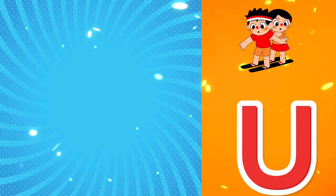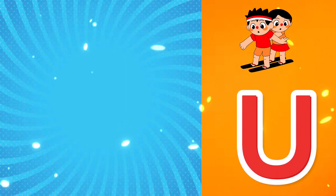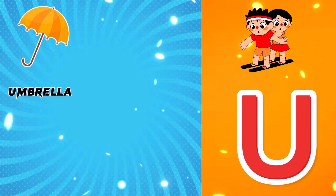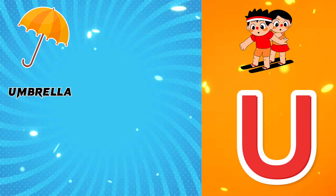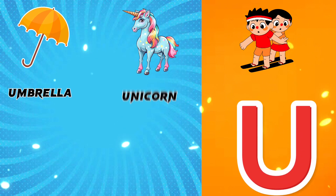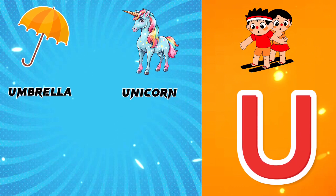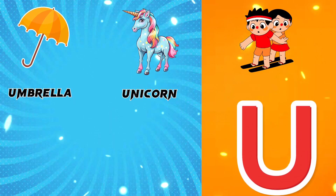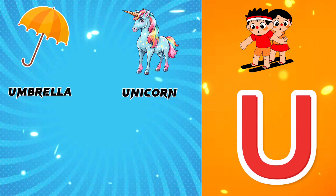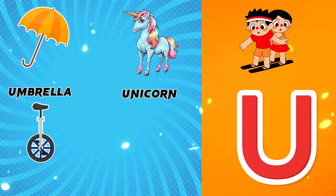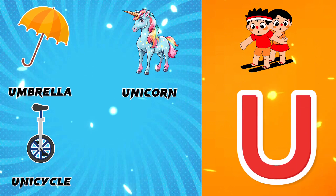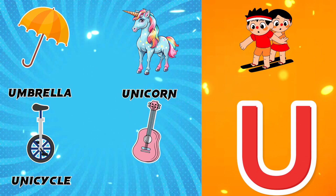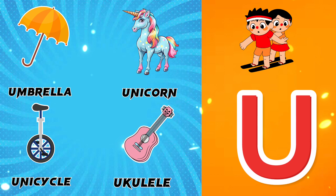U is for Umbrella. U is for Unicorn. U is for Unicycle. U is for Ukulele.